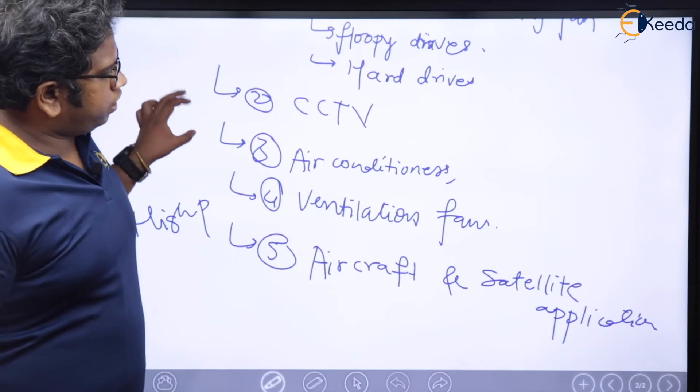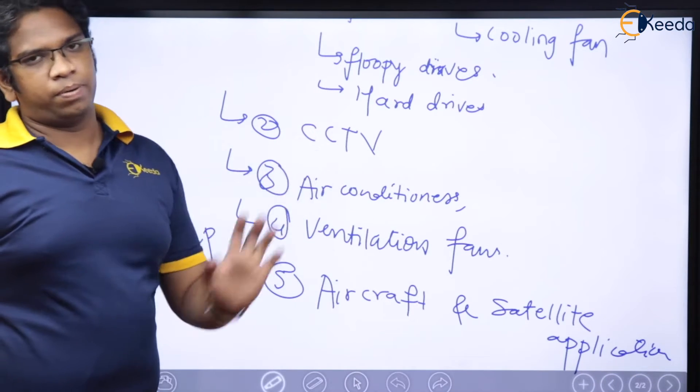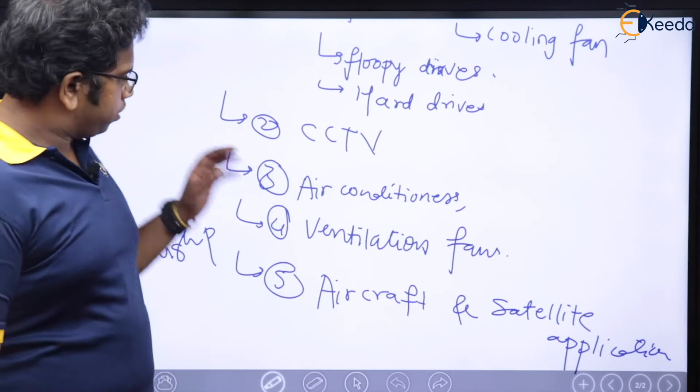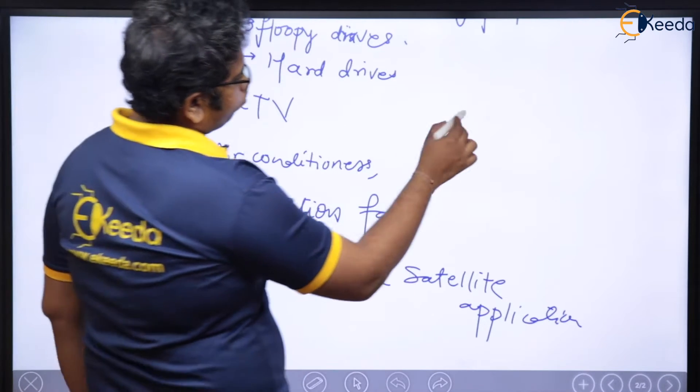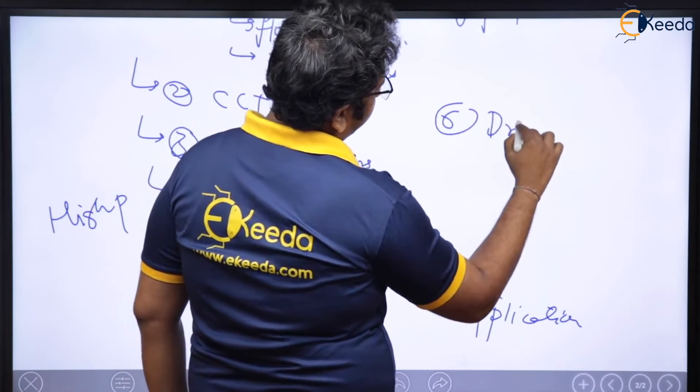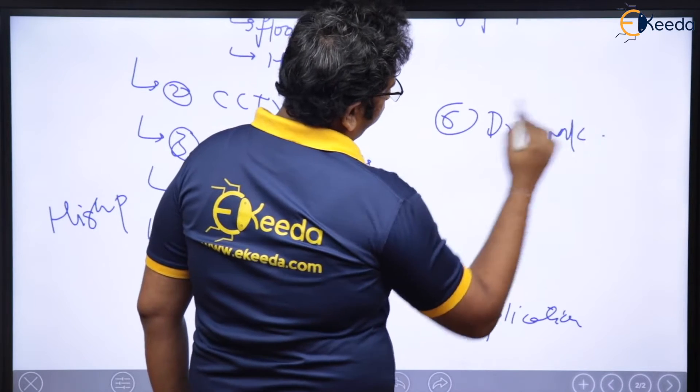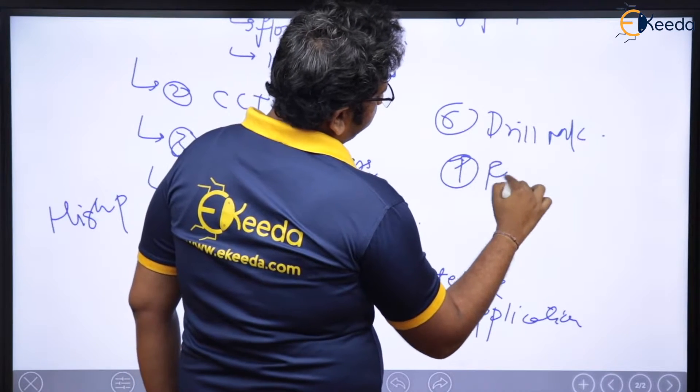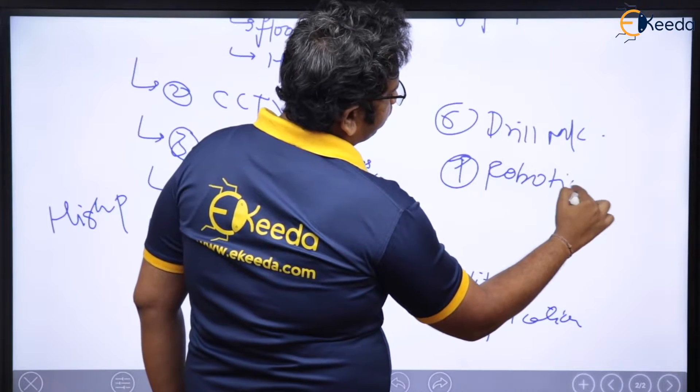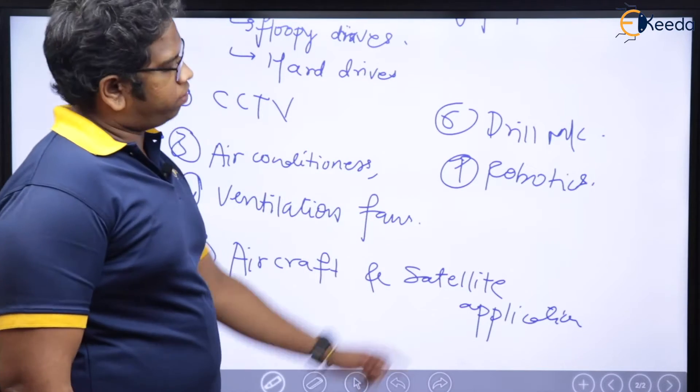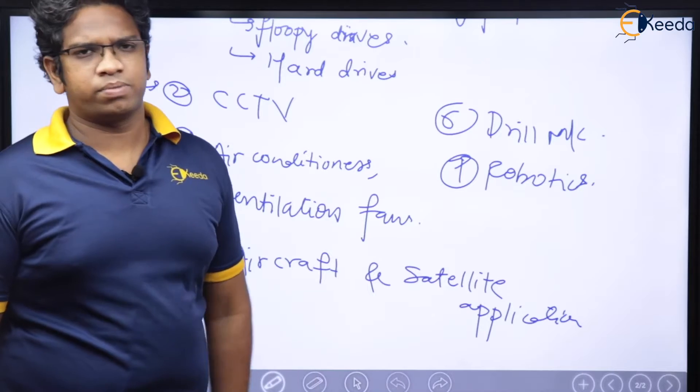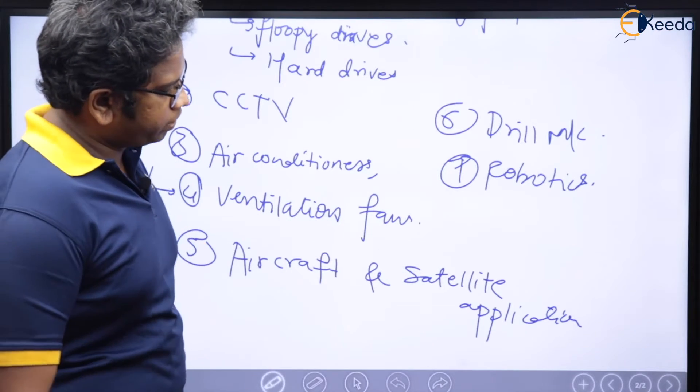Even if you think of some tools also like drill machines and all, then robotics. Robotics also. Low power stuff can be around 48 volts or something like that. So these are quite a few applications.